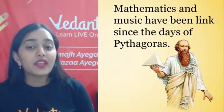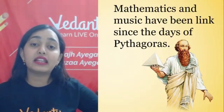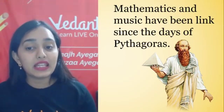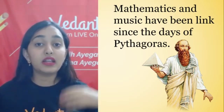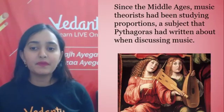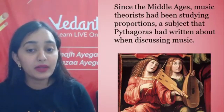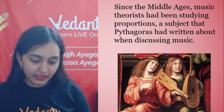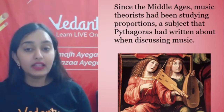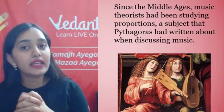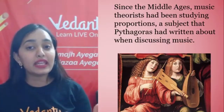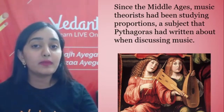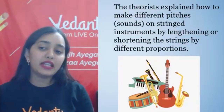Mathematics and music have been linked since the days of Pythagoras — wahi Pythagoras jinka Pythagoras theorem hum padte hain, unhone hi derive kiya tha ek link between maths and music. Since the middle ages, music theorists had been studying proportions, a subject that Pythagoras had written about when discussing music. So Pythagoras ne basically ek study ki thi regarding proportions, aur wo study usne music ki help se ki thi. So proportions, jo aap math mein padte ho, woh invented hua tha when discussing about music.